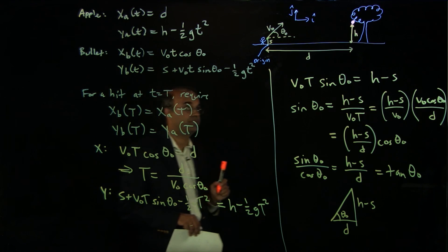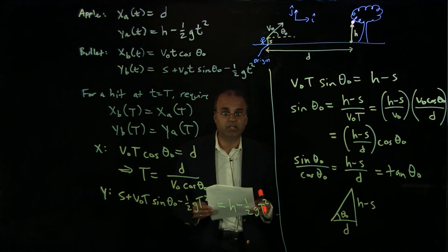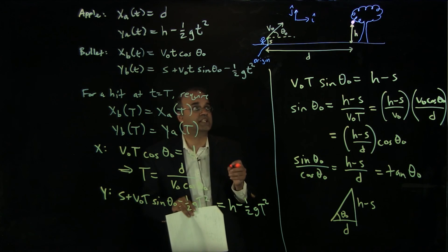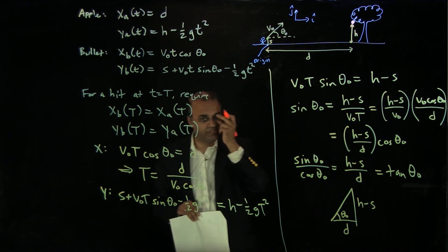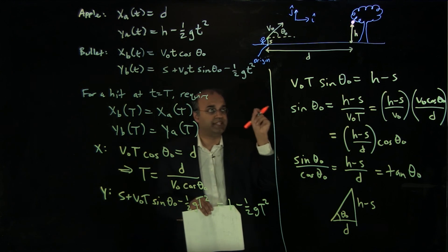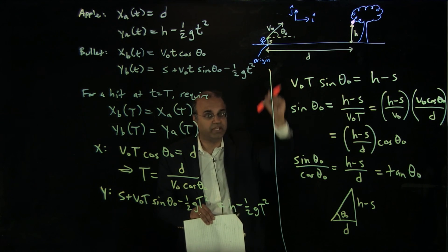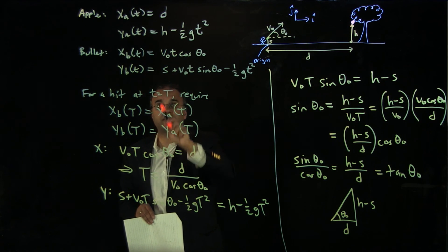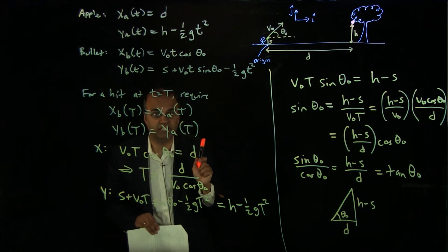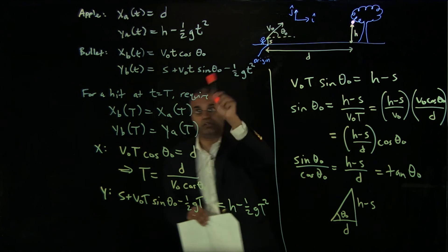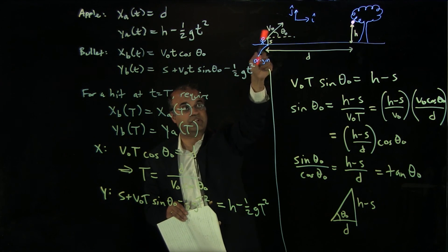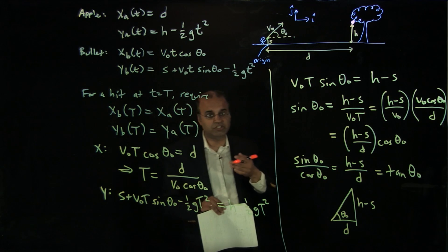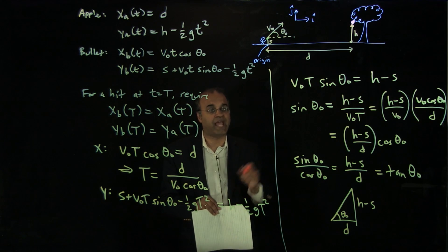The second case to consider: what if the apple began dropping for a short interval before we fired? At the moment we fire, the apple already has some downward velocity from falling during that interval. We'd add a term −v_apple·t to the apple's y-kinematics, where v_apple is that initial falling velocity. The specific details of the apple's motion change the kinematics, and it's worth thinking about how that would change the answer.